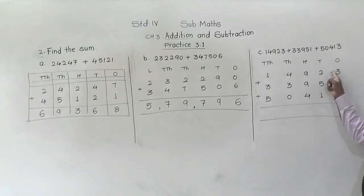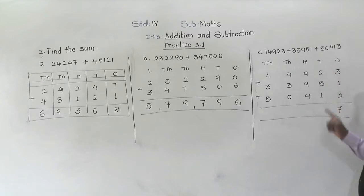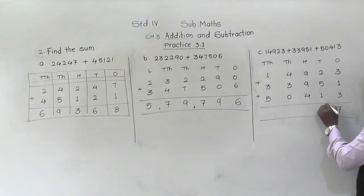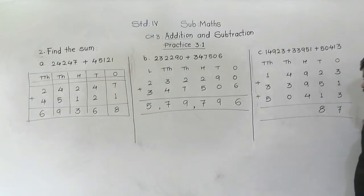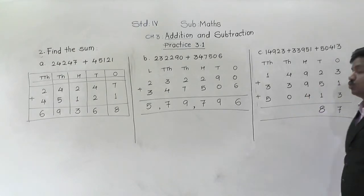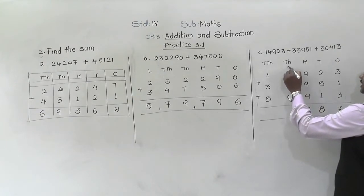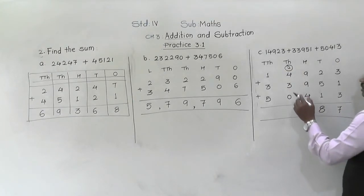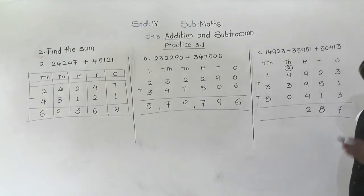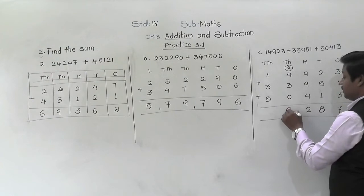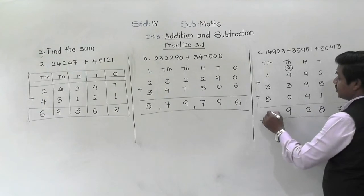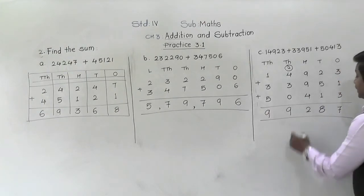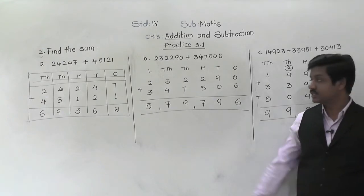Five plus two is seven; seven plus one is eight. Nine plus nine is eighteen; eighteen plus four is twenty-two — write two and carry two. Four plus three is seven; seven plus zero is seven; add the carry of two to get nine. Three plus one is four; four plus five is nine. The answer is 99,287.